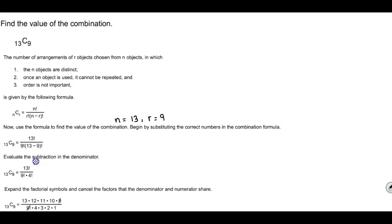So now we're going to end up getting 13 factorial, which is n here, divided by 9 factorial times 13 minus 9 factorial.